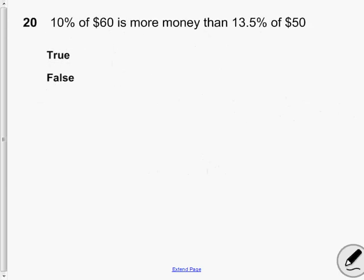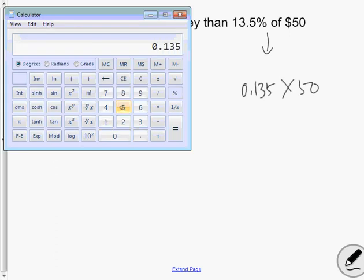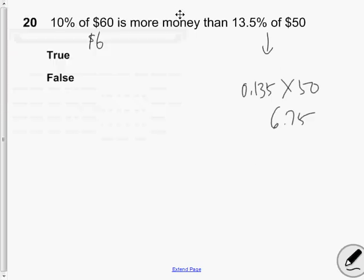And finally question 20: 10 percent of sixty dollars which is six dollars is more money than 13.5 percent of fifty dollars. So really I have to figure out this one here. 13.5 percent of fifty dollars is six dollars and seventy five cents. So therefore the answer we were looking for for twenty is false. It is not more money.